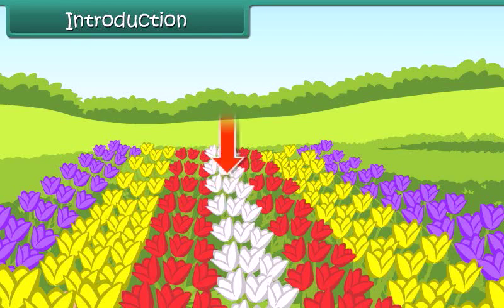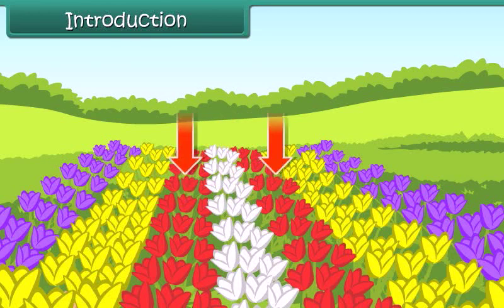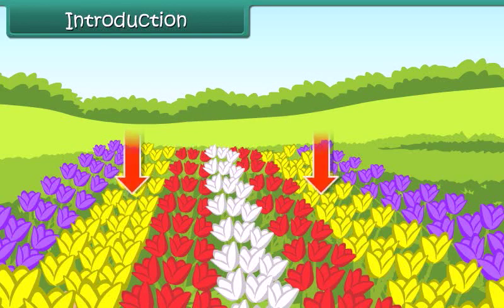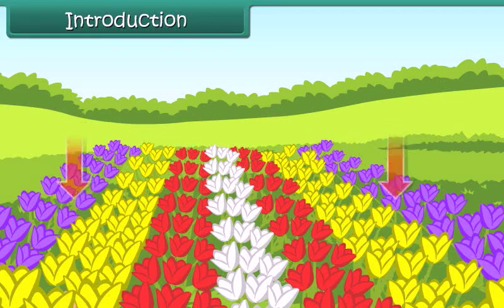The white tulips are at the center. On either side, there are red tulips. Beyond the red tulips are the yellow ones followed by the purple tulips.